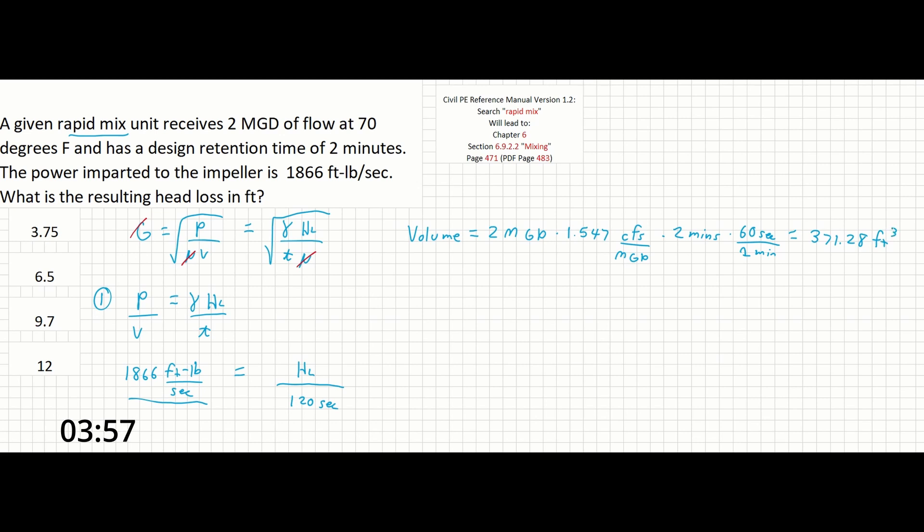And this will give us an answer of about 371.28 feet cubed. We can see here that MGD and MGD cancels out, minutes and minutes cancel out. And of the cubic feet per second here, seconds and seconds will cancel out, leaving us with cubic feet. So we can write this at the bottom here, 371.28 cubic feet.